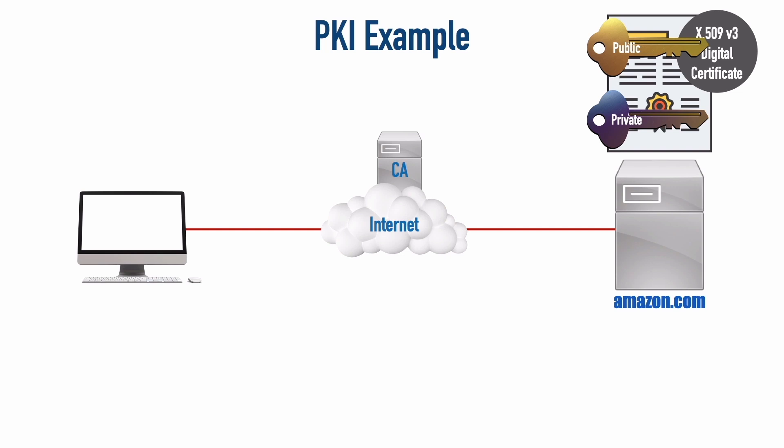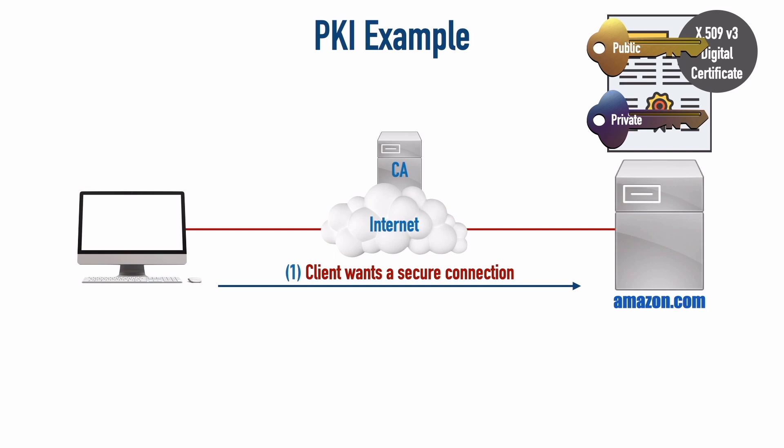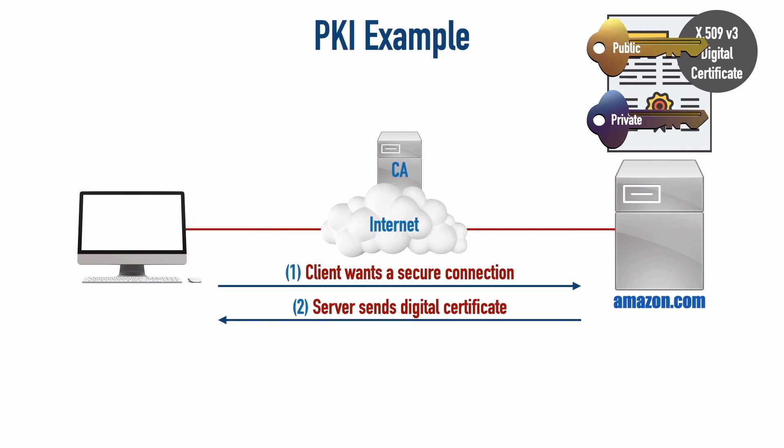When we go to buy something from Amazon.com, we use asymmetric encryption briefly until we switch to symmetric encryption. Amazon.com has two keys: a public key and a private key. If I encrypt something with my public key, it can only be decrypted with my private key — which I don't give to anybody. Conversely, if I encrypt something with my private key, it can only be decrypted with my public key. The public key is included inside the digital certificate. So let's walk through a secure transaction between our computer and Amazon.com.